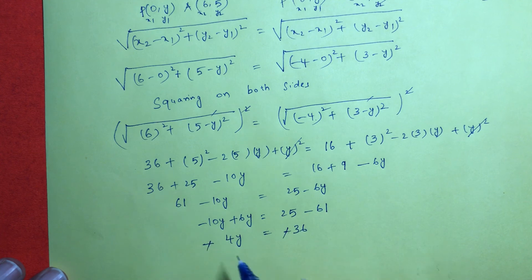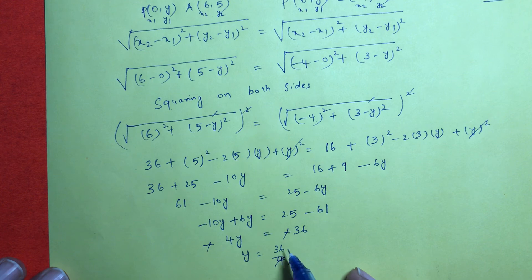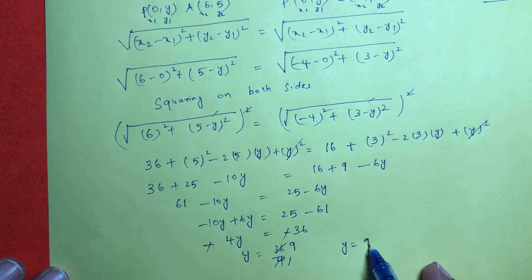Minus and minus will get cancelled. So y equals 36/4. 4 times 9, so y equals 9.